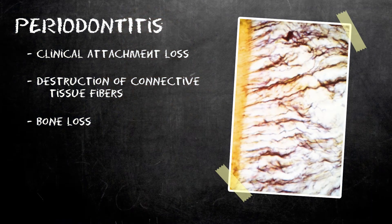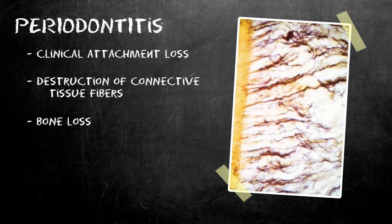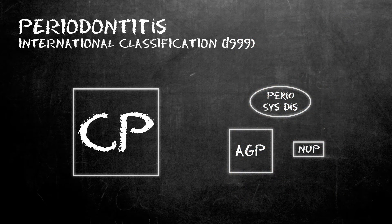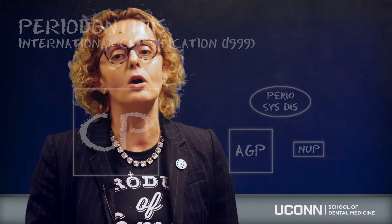Chronic periodontitis is the most common form of periodontitis. It's more prevalent in adults more than 45 years old. It's characterized by pocket formation and attachment and bone loss. The disease is associated with the presence of plaque and calculus. It generally progresses very slowly, almost 0.1 mm a year.